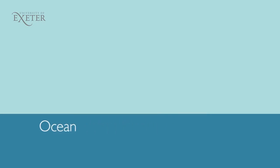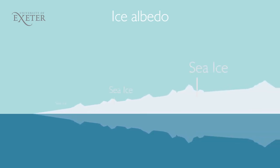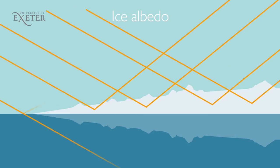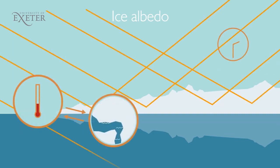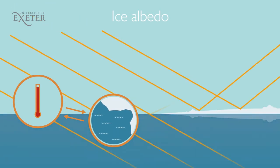The next type of feedback that has a significant influence on the climate system is the ice albedo feedback. If we take an area of ocean that is mostly covered by sea ice, say in the Arctic, much of the solar radiation reaching the surface will be reflected back into the atmosphere by the highly reflective ice, which we say has a high albedo. The ocean surface, on the other hand, will reflect some solar radiation, but it tends to absorb more than it reflects, because it has a low albedo. So if we warm the system up and this melts some sea ice, we'll still have some reflection from the remaining sea ice, but where open water is exposed, we'll get much more absorption of incoming sunlight as heat going into the ocean. This warming of the ocean will melt more sea ice, and so on.